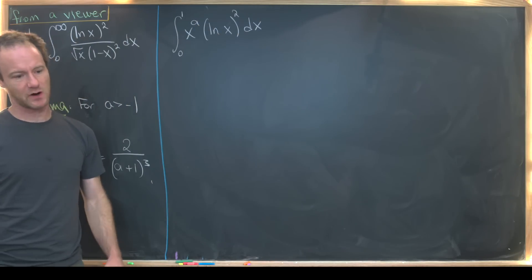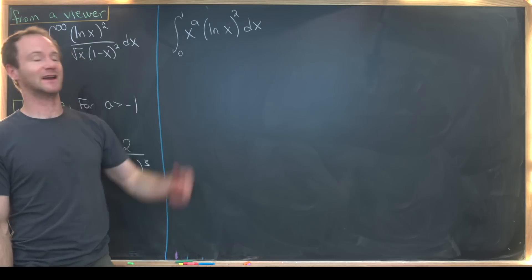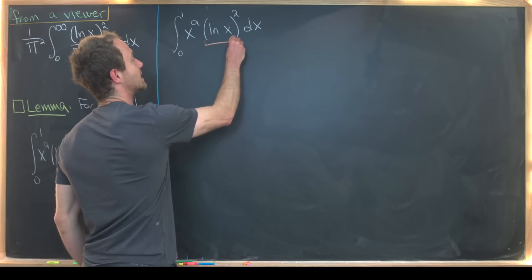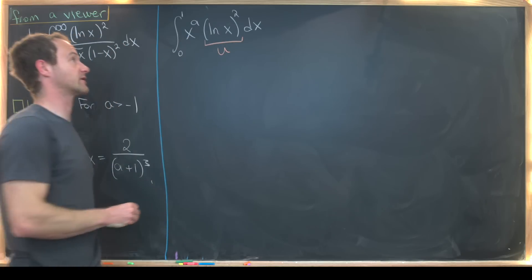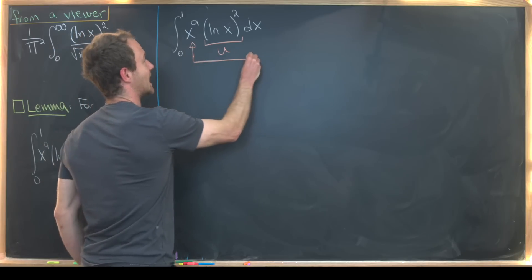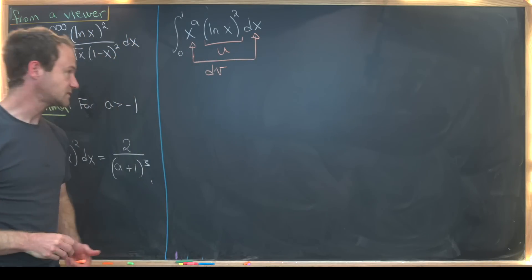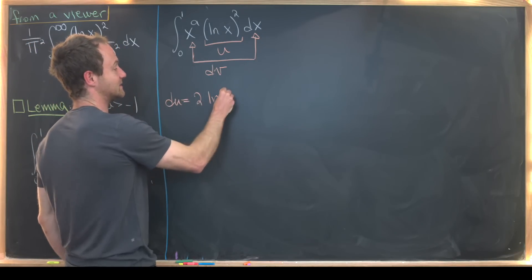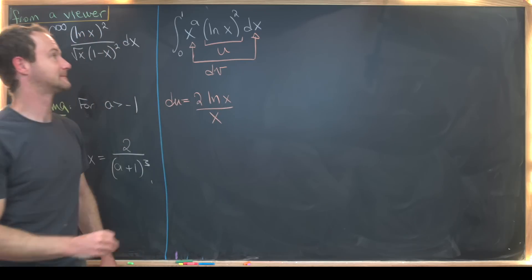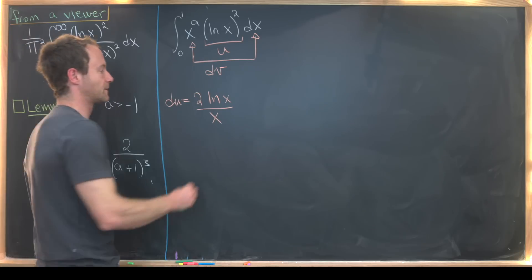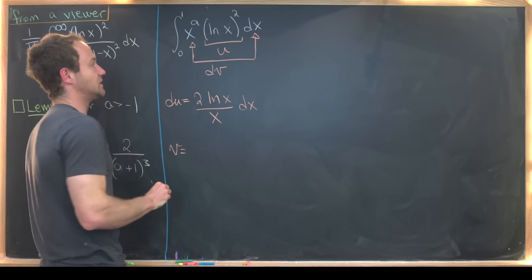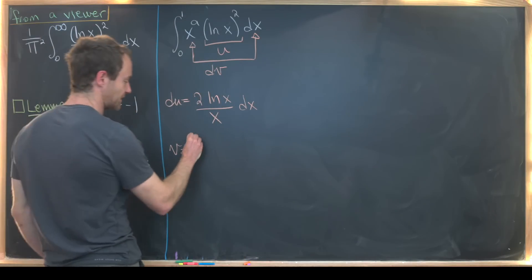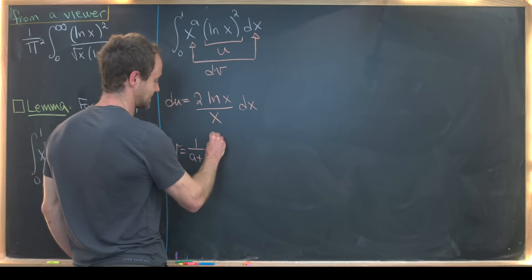Let's prove this lemma using integration by parts. The big hint that we should use integration by parts is that we've got an inverse function here — that's a standard setup. So we let u equal the natural log of x squared, and dv equal x to the a dx. That means du is 2 times the natural log of x over x dx, and using the power rule — valid since a is greater than negative 1 — v equals 1 over (a+1) times x to the (a+1).